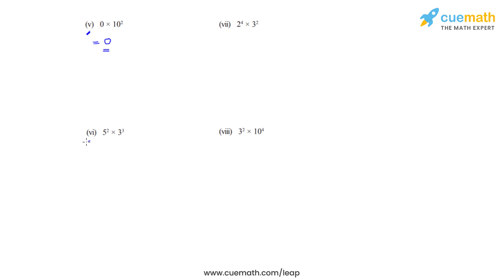In the sixth bit we have been given 5 raised to 2, that is 5 squared which is 25, times 3 raised to 3 which is 3 cubed. So 3 threes are 9, and 9 threes are 27. So we have to multiply 25 times 27, and that gives us the product as 675.